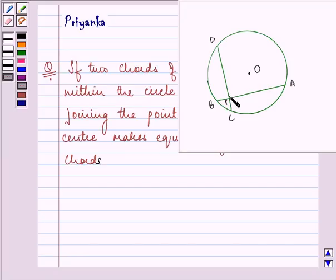I need to prove that the line joining the point of intersection to the center makes equal angle with the chord. Now, let us quickly write down whatever is given to us in the question.